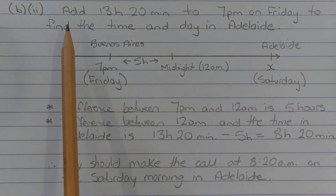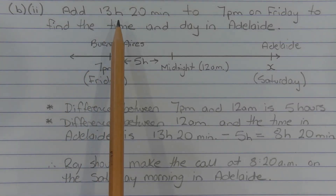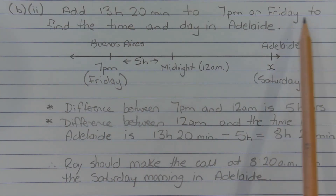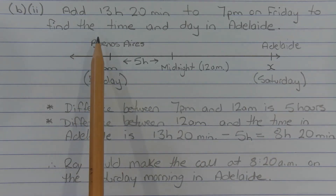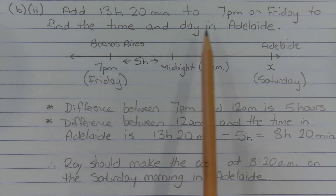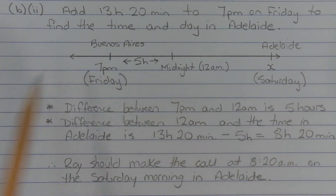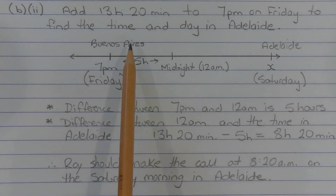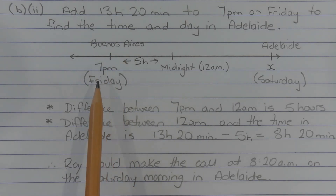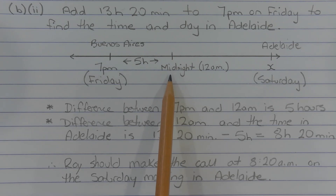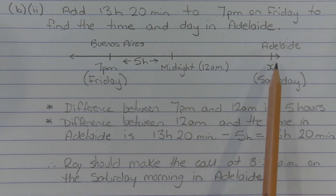We need to add 13 hours and 20 minutes to 7pm on Friday in Buenos Aires to find the corresponding time and day in Adelaide. I've used a number line to visualise the time difference between the two cities. There's Buenos Aires at 7pm on Friday, relative to midnight, and there's Adelaide.